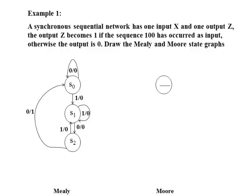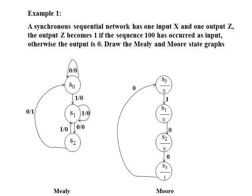We follow the same steps in the Moore state graph. However, the value of the output is written within the same state. State S0 has an output of 0, meaning the network at state S0 has an output of 0. When the network receives an input of 1, it goes to state S1 with output still 0. When it receives a 0, it transitions through states until the sequence 1, 0, 0 has occurred, at which point the output changes to 1. In the same way, we check all possible inputs at each state.